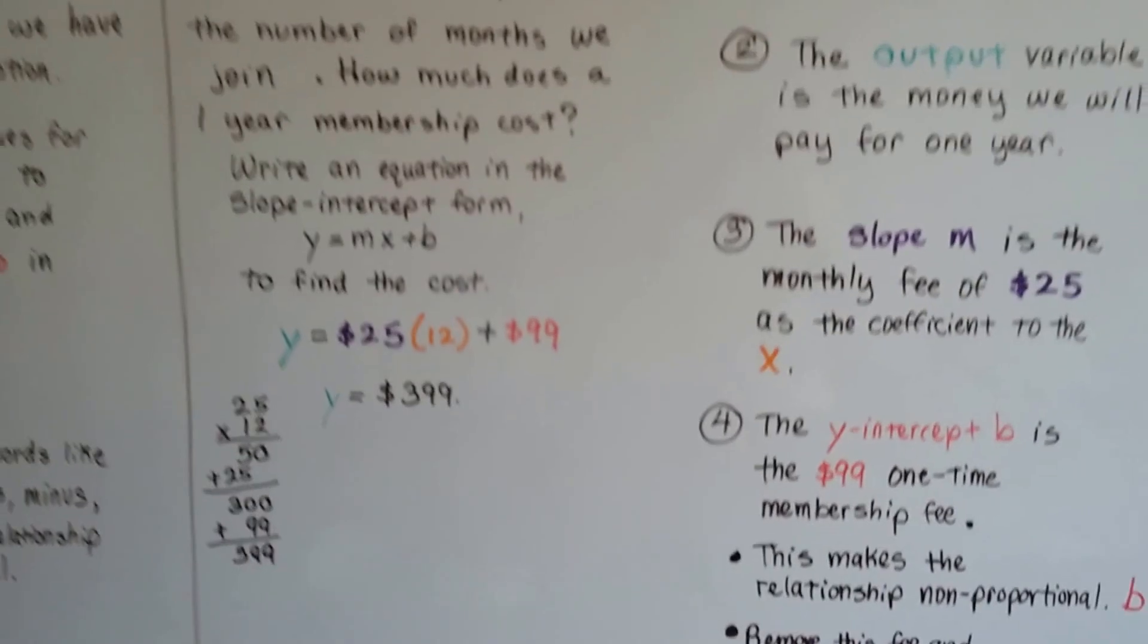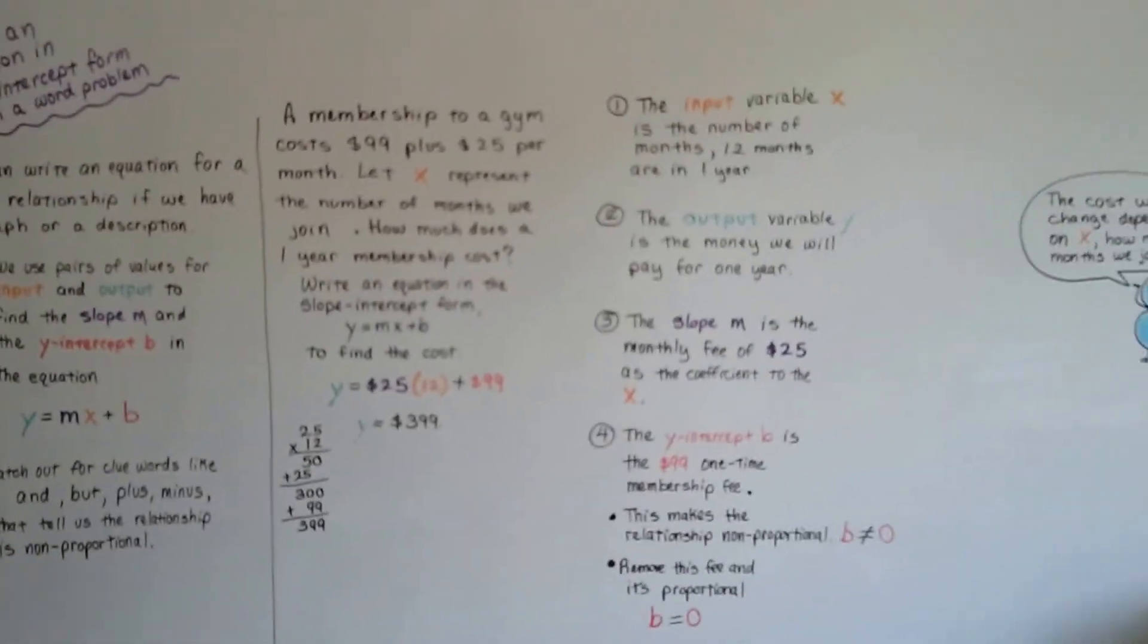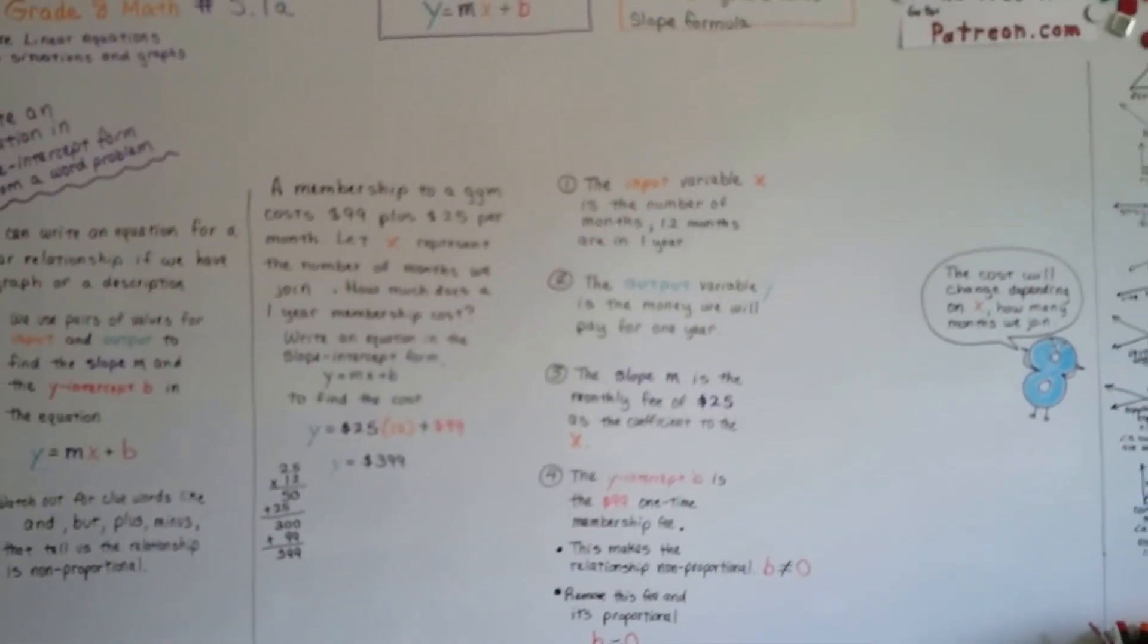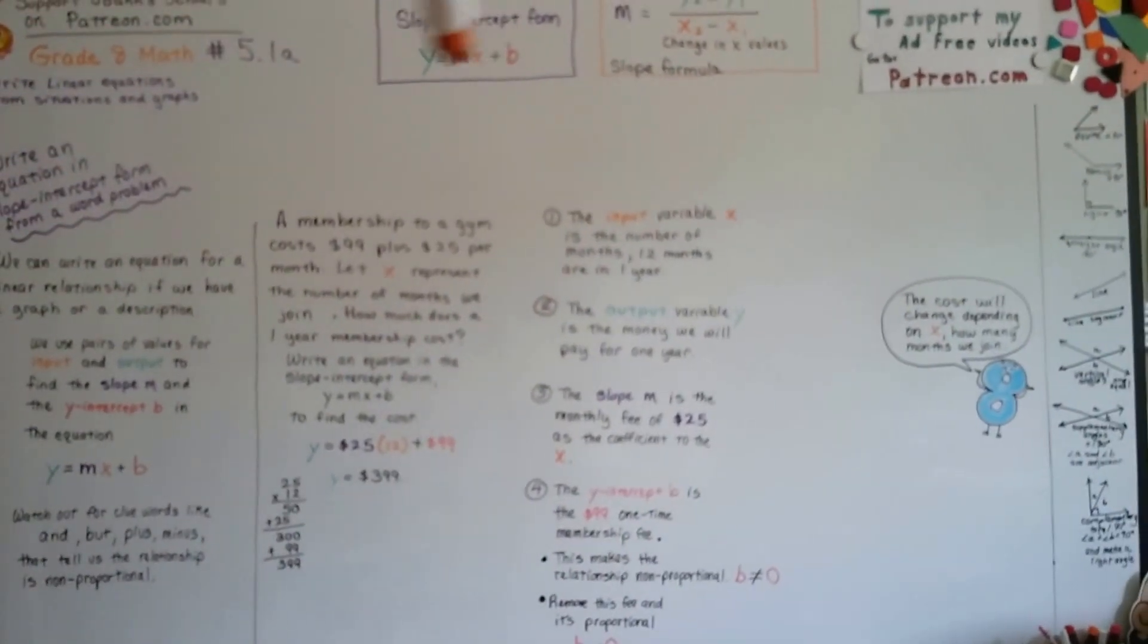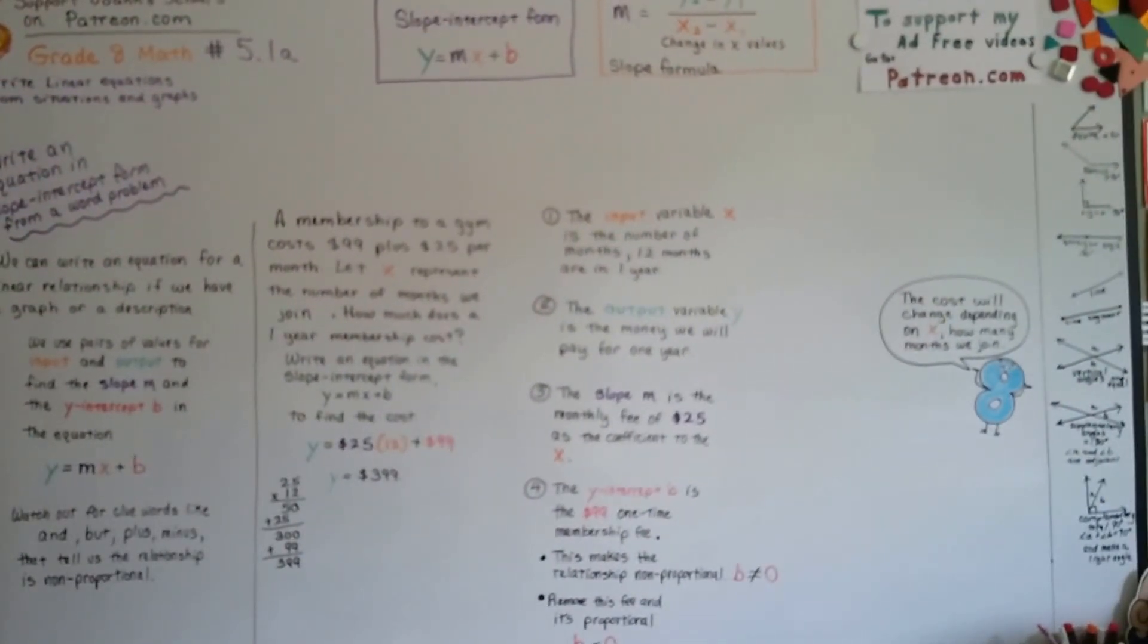That wasn't too bad, was it? Is that understandable? And we've got it in our slope-intercept form here.